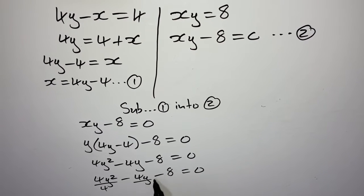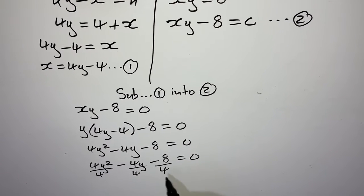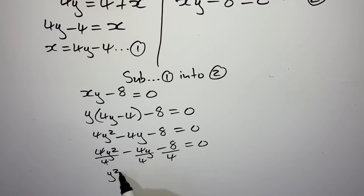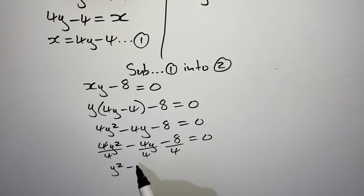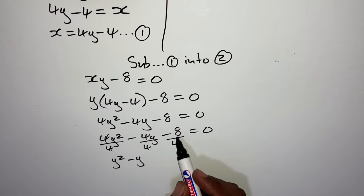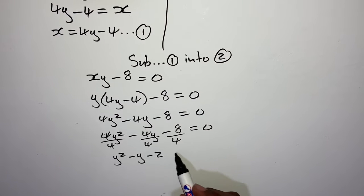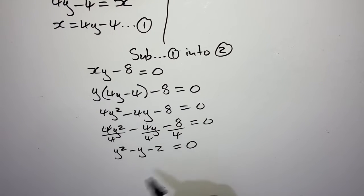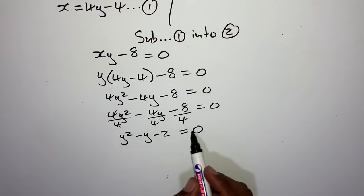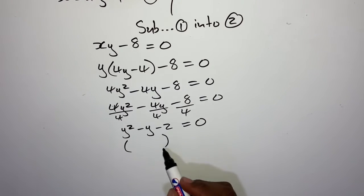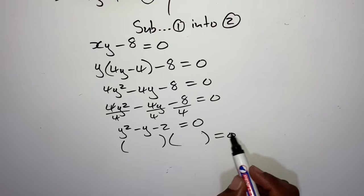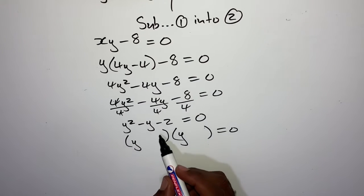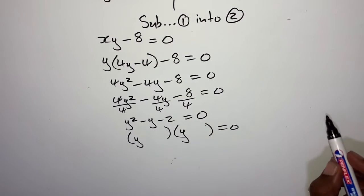Draw a dividing line. The second equation given is y equals x squared minus x minus 10. Rearranging: x squared minus x minus 10 minus y equals 0. We name that to be our second equation. Then we proceed to substitute equation 1 into equation 2.